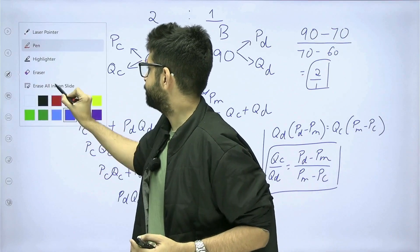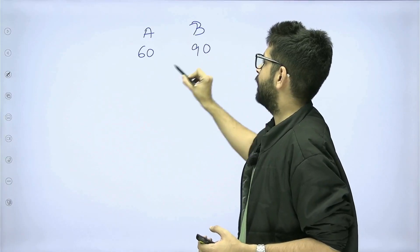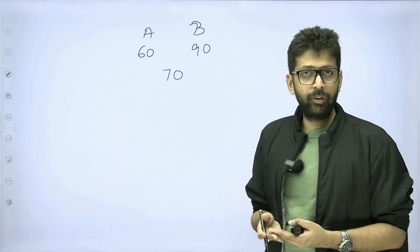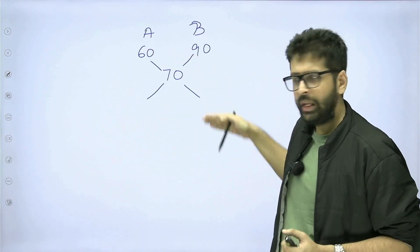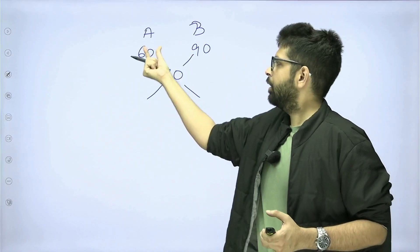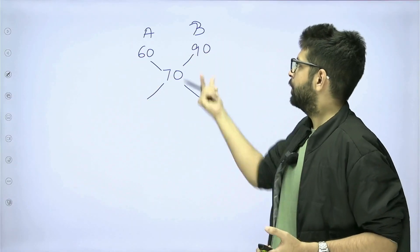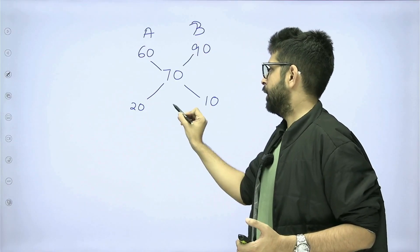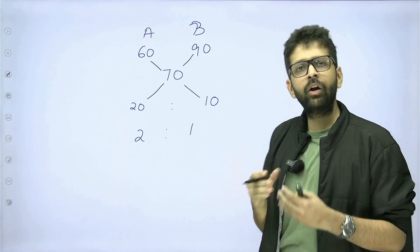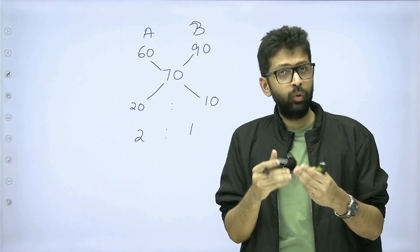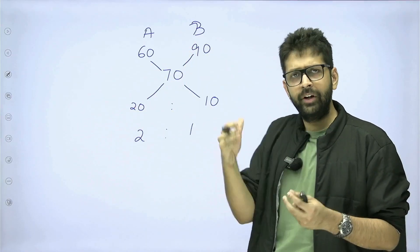There's an easier way of doing this, derived from that formula. Brand A was 60 per kg, brand B was 90 per kg, and the final price we wanted was 70 rupees per kg. You just draw these lines and follow them. 70 minus 60 = 10, and 90 minus 70 = 20. The ratio is 2 is to 1. So brand A and brand B need to be mixed in the ratio 2 is to 1 to achieve a mean price of 70. This is what is expected of you in the examination — the shortcut, not the full derivation.